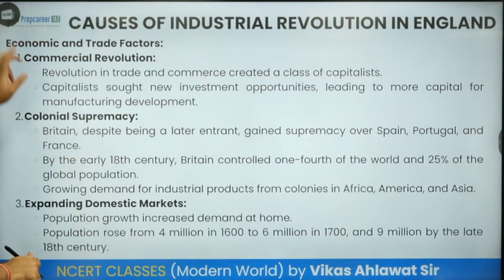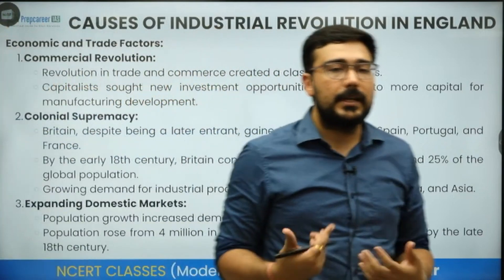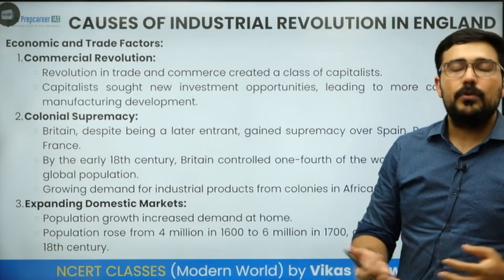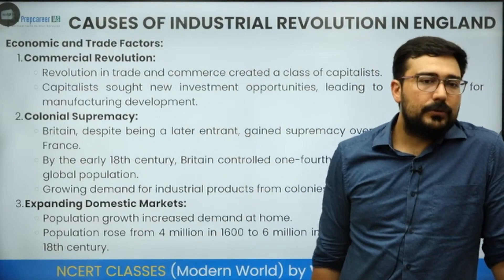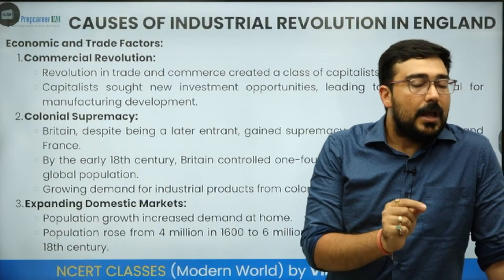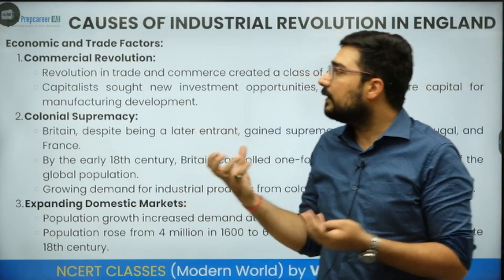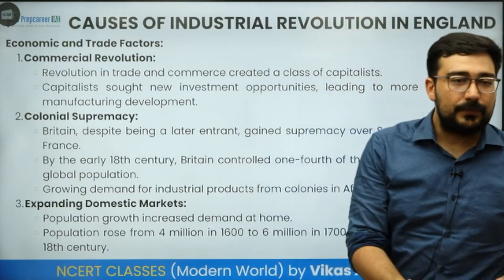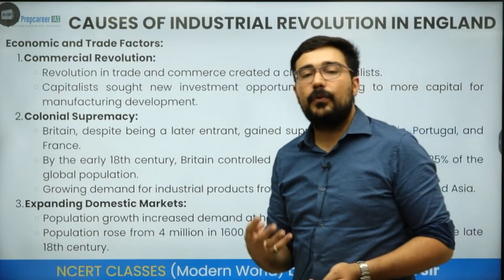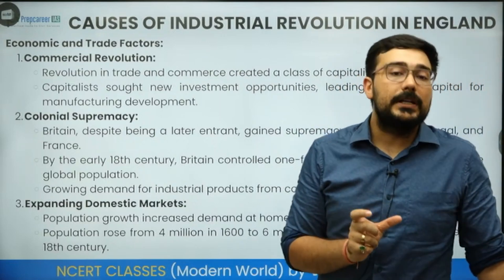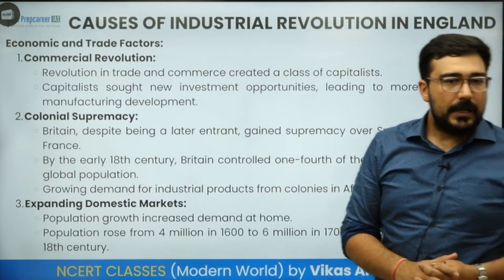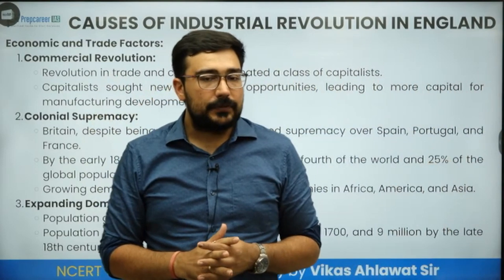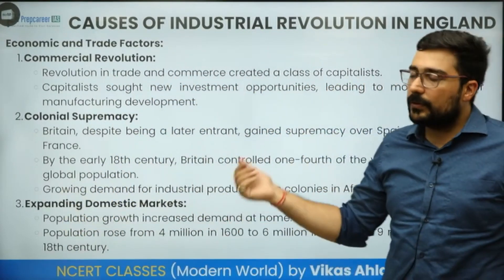What were the causes of industrial revolution in England? Why did England become the major place of industries in the 18th century? Number one: economic and trade factors. The first important keyword is commercial revolution. People had already gained a lot of wealth because of the commercial revolution, and when they had wealth they were ready to invest. Without capital we cannot have industries. Second: colonial supremacy — England captured large parts of the world and drew wealth which could be utilized for the creation of industry.